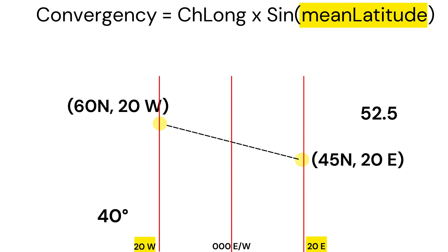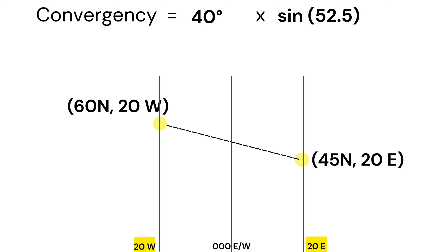Now, if you substitute the values we got, 40 degrees and 52.5 in the formula, we get convergency as 31.5.